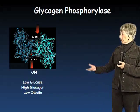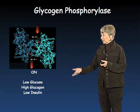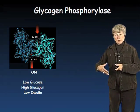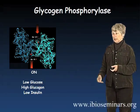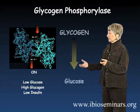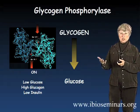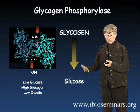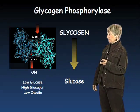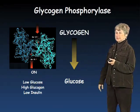When glucose levels are low, you have high glucagon and low insulin. In this case, you want to mobilize the glycogen stored in the liver, and this enzyme is turned on. It's turned on by the addition of one phosphate to each of the chains in the glycogen phosphorylase dimer.